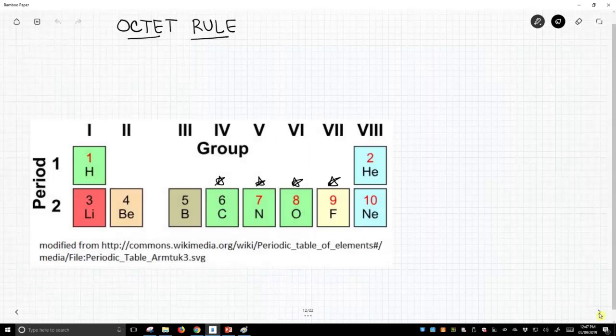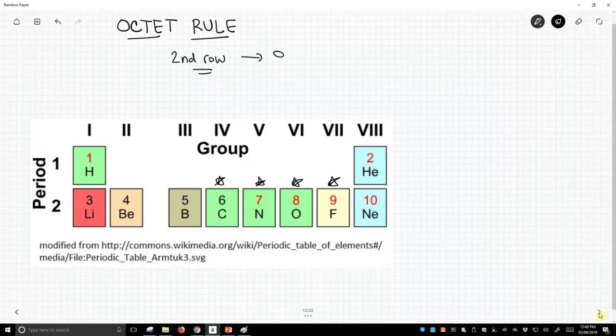The octet rule is an idea that we apply to second row elements especially, that we can have eight electrons at most in our valence shell.